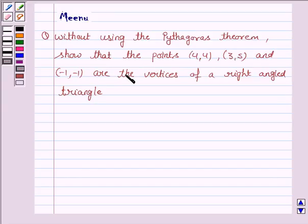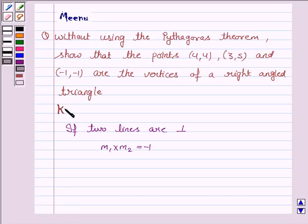Let us understand the key idea behind this question. If two lines are perpendicular, then the product of their slopes is minus 1. So if m1 is the slope of one line and m2 is the slope of the other line, then m1 into m2 is equal to minus 1. This knowledge will work as key idea.